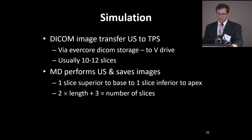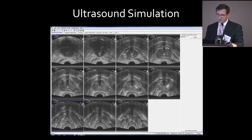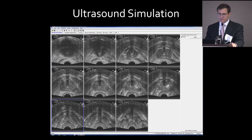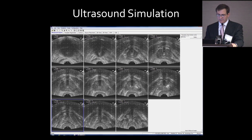In the simulation, we transfer DICOM images from the ultrasound to the treatment planning system. We take one additional slice superior and one additional slice inferior to the base. The key equation is: two times the length plus three equals the number of slices you'll collect during that ultrasound simulation. In the upper left-hand corner you'd see the bladder, then the next slice is the base slice, moving through to the apex at the lower right corner. Identifying that apex and localizing the base well can be challenging.